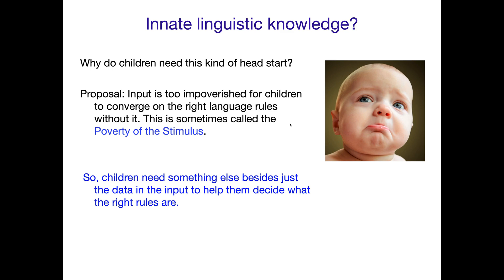Proponents of innate linguistic knowledge, innate knowledge in general, are pretty clear that children need some sort of head start. And why do they think this? The idea is that the input that children are exposed to is too impoverished for children to figure out the right language rules without some kind of help. And so this issue of the input being too impoverished, of it being not enough on its own to have children figure out the right rules for their language, this is sometimes called poverty of the stimulus.